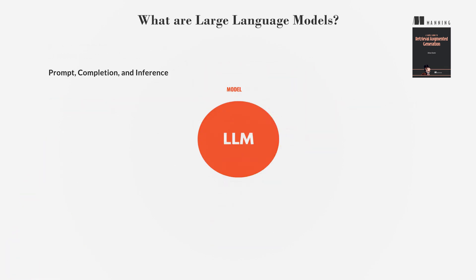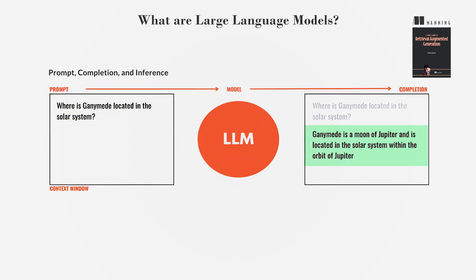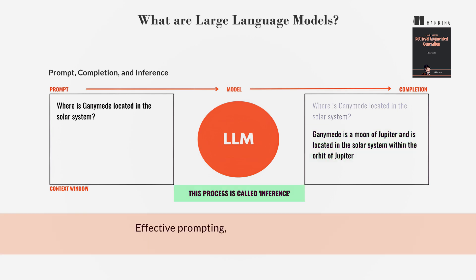Interacting with LLMs involves providing inputs or prompts in natural language, which the model uses to predict and generate text outputs. This process is called inference. Effective prompting, or prompt engineering, is crucial for high-quality responses.